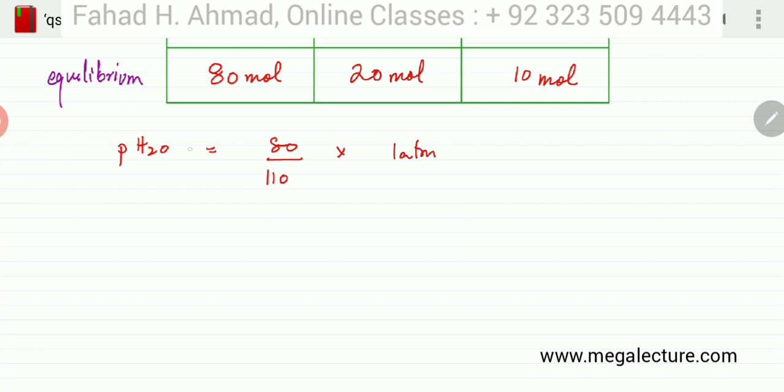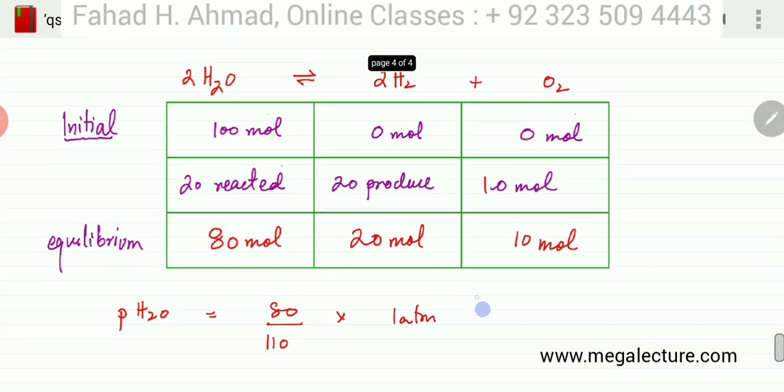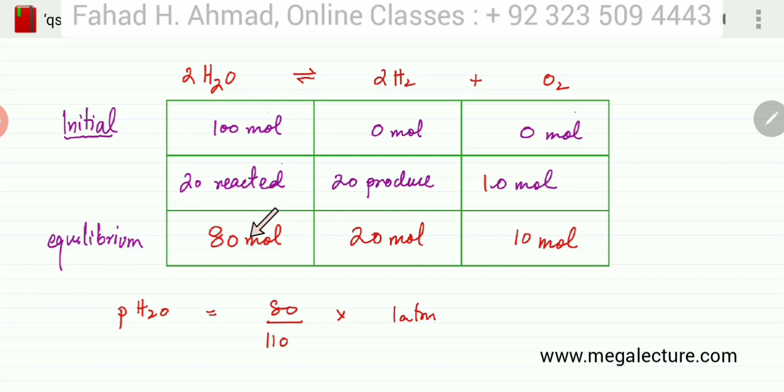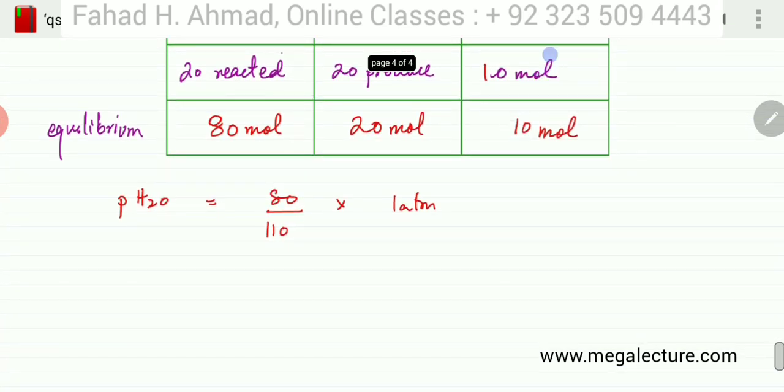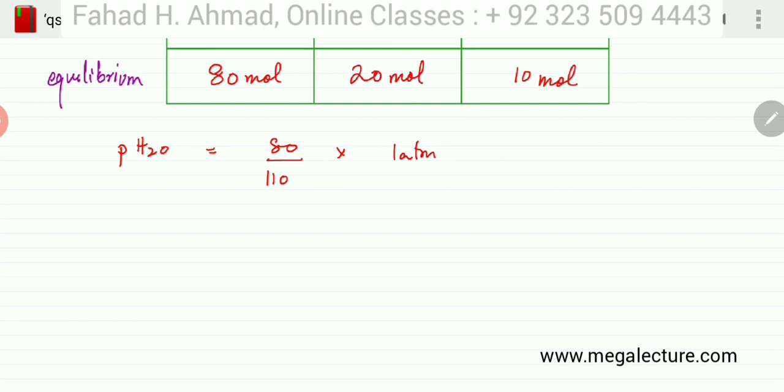So this over here is the way I've calculated the partial pressure of H2O, which is that it's the moles of H2O divided by the total moles at equilibrium. So the ratio is 80 moles of H2O present at equilibrium and the total moles, if you add them up, it's 80 plus 10 plus 20, that gives me 110. So multiplied by the pressure at equilibrium, which was given as 1 atmosphere. And this value, it's 80 over 110 into 1 atmosphere. And this is the same thing I'm going to do with all the other components.